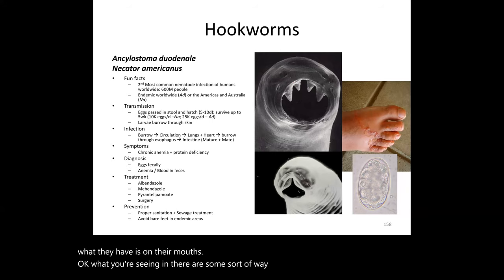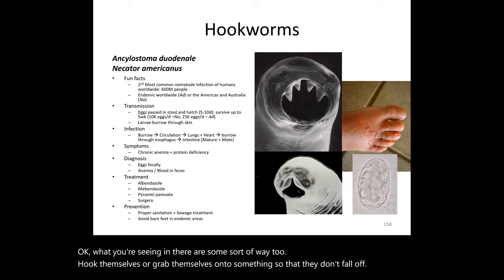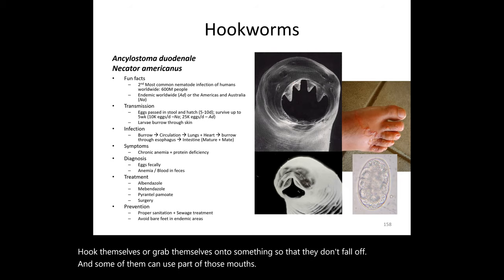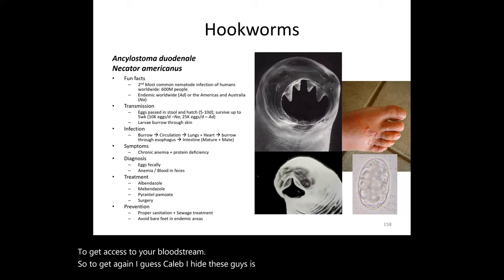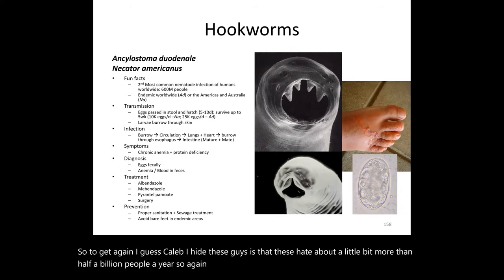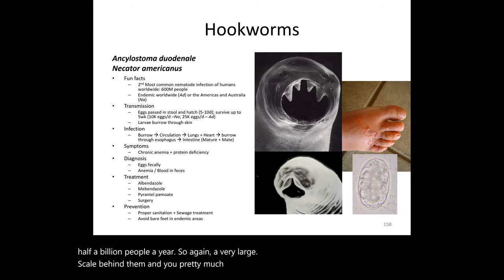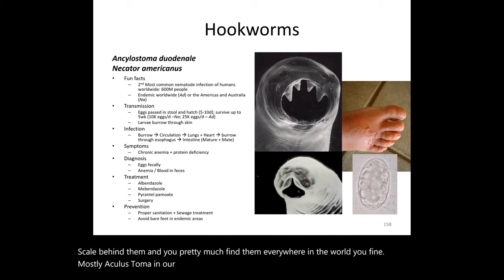What you see on their mouths are structures that allow them to hook or grab onto tissue so they don't fall off, and some can use parts of those mouths to cut through you and enter your bloodstream. To give scale: hookworms infect a little over half a billion people a year. They're found virtually everywhere in the world — Ancylostoma more in our area, Necator more in southern regions.